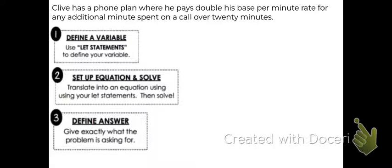So here it says Clive has a phone plan where he pays double his base per minute rate for any additional minutes spent on a call over 20 minutes. Part A of this question is asking us to define our variables, and part B is asking us to write an equation. We need to do that using just this information at the top. Part C goes on to give us some of the numbers, the number of minutes, the total cost. But let's assume we don't know that at this point. We only know what's at the top of the screen.